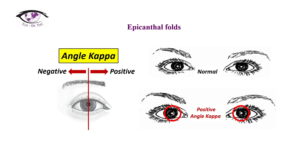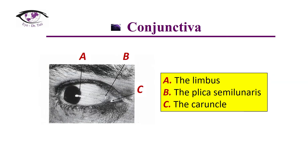Clinically, a positive angle kappa gives a feeling of exotropia, but this is not a real exotropia — it is simulated or pseudo-exotropia. Negative angle kappa is the vice-versa condition, where the pupil light reflex is located temporally and simulates esotropia.